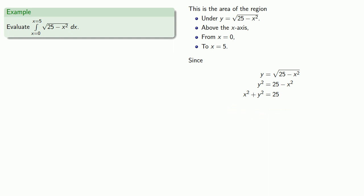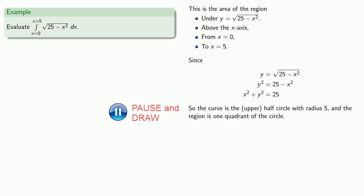And the equation itself describes a circle with a radius of 5 centered at the origin. But because we're looking at the region that's under y equals square root 25 minus x squared, and above the x-axis, the curve is the upper half circle with radius 5, and the region itself is going to be one quadrant of the circle. And that means the area of this region will be 25 pi over 4.